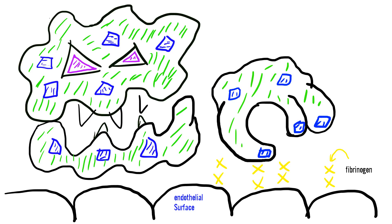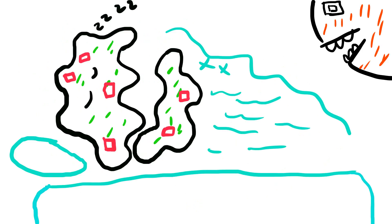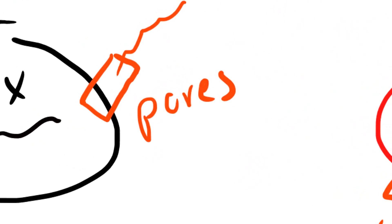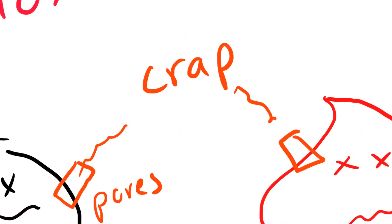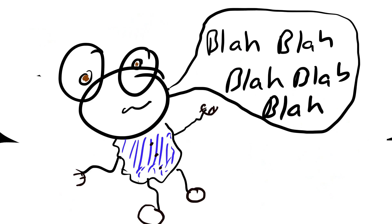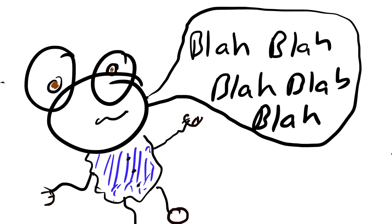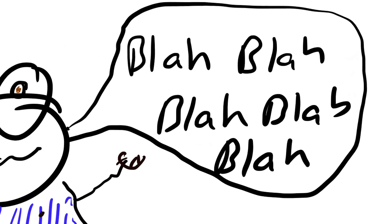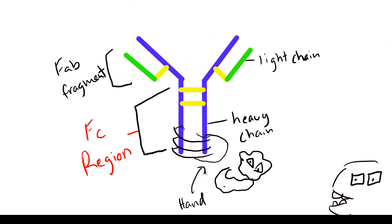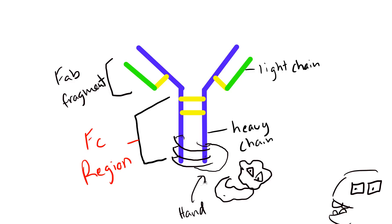Some of the other virulence factors include the clumping factor — aka fibrinogen binding protein — which binds to fibrinogen on the normal endothelial surface. Coagulase converts fibrinogen to fibrin, coats itself, and resists phagocytosis; it also causes vegetations. Alpha toxin forms pores inside cells, causing contents to leak out and cells to die — it affects red blood cells, platelets, and other cell types. There's also thromboplastin, which helps make vegetations, and teichoic acid, which binds to fibronectin of damaged cells and clots. Protein A binds to the Fc portion of IgG and prevents phagocytosis.